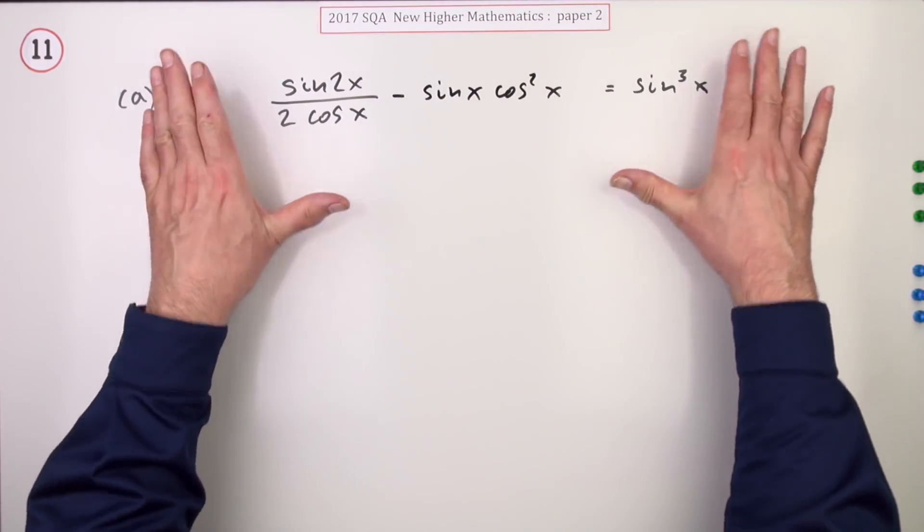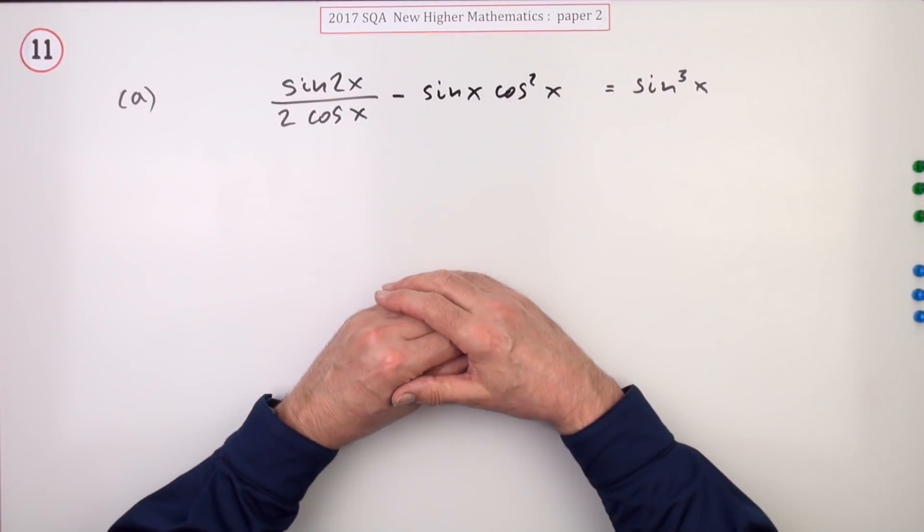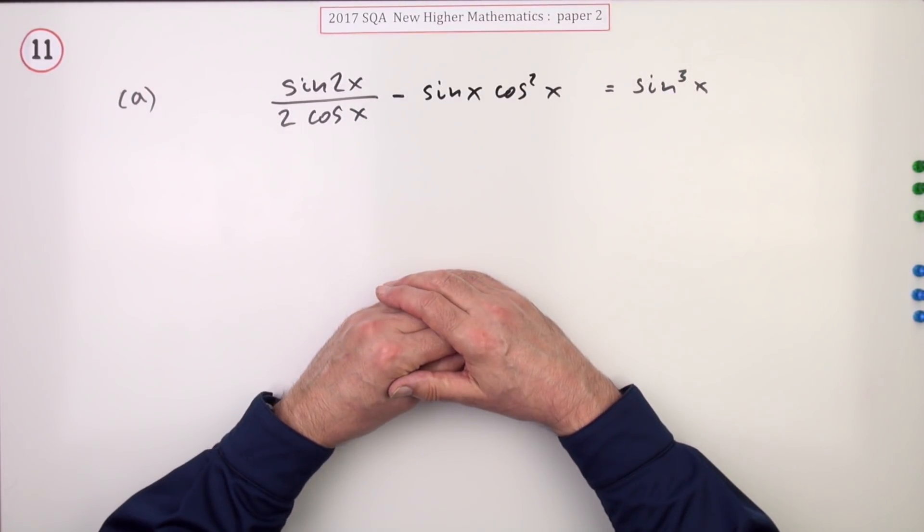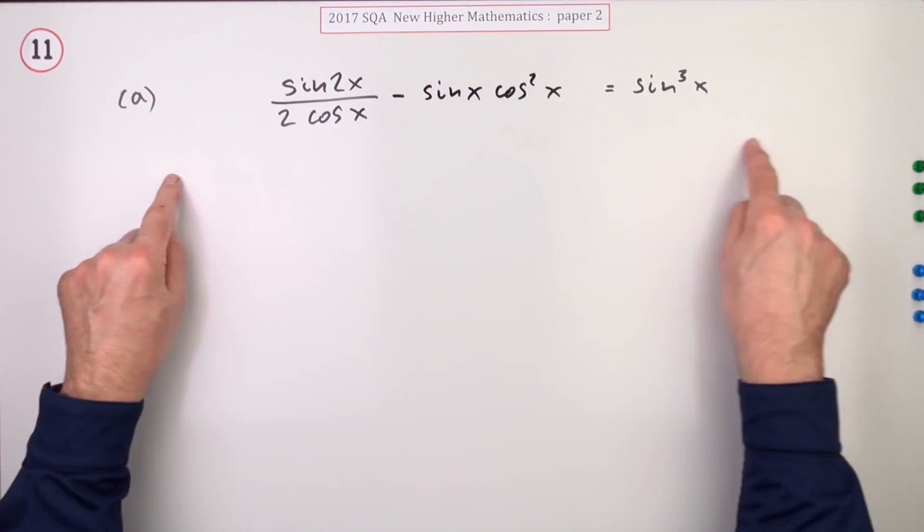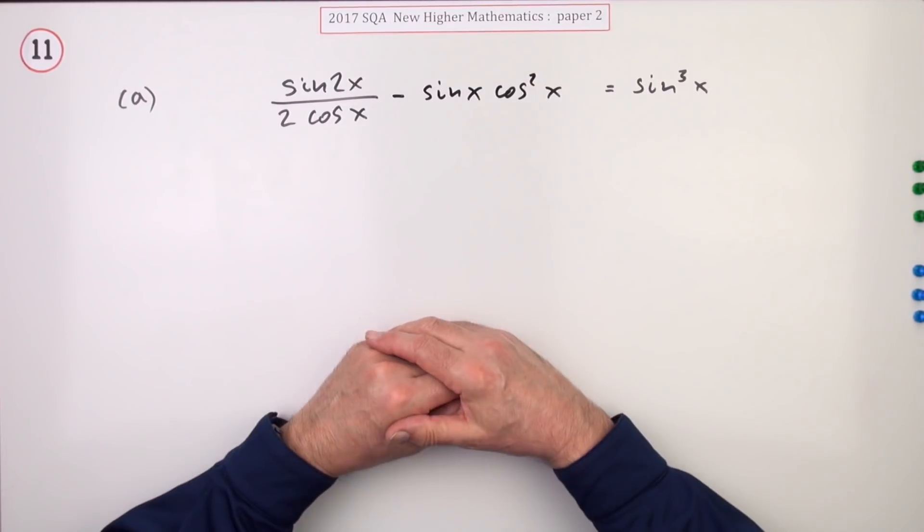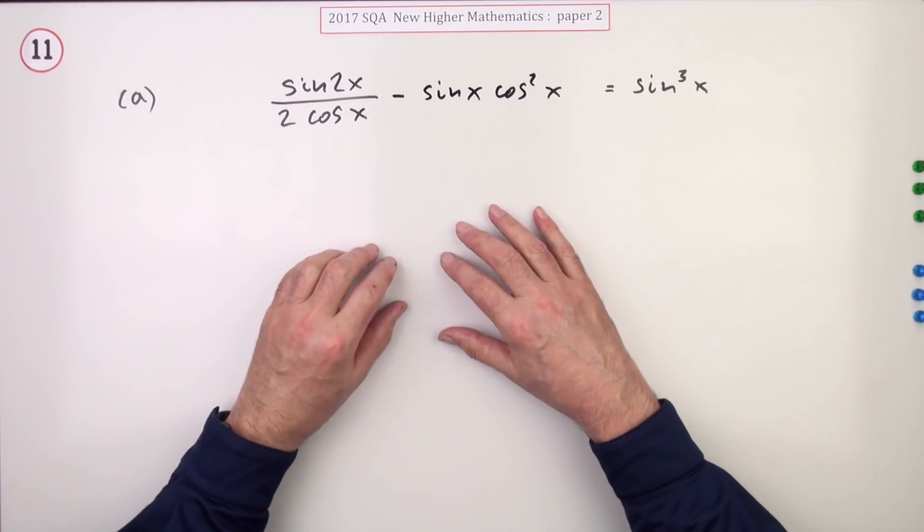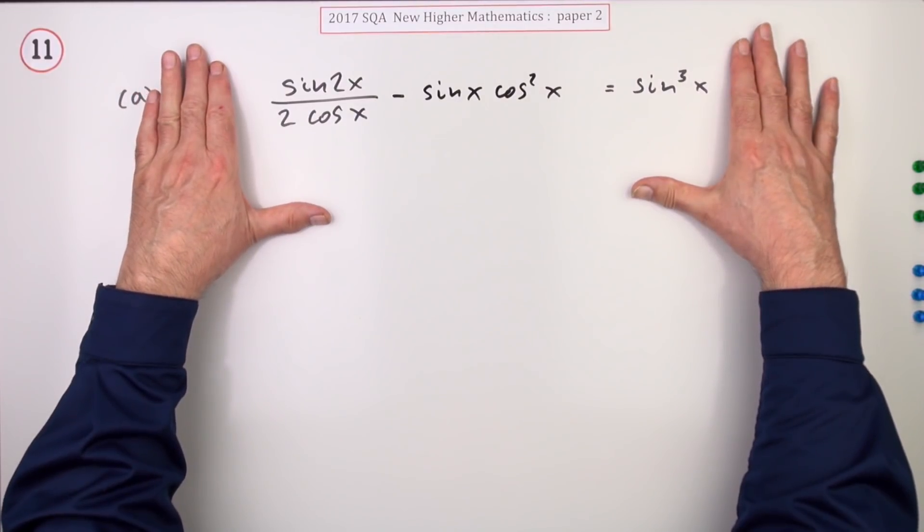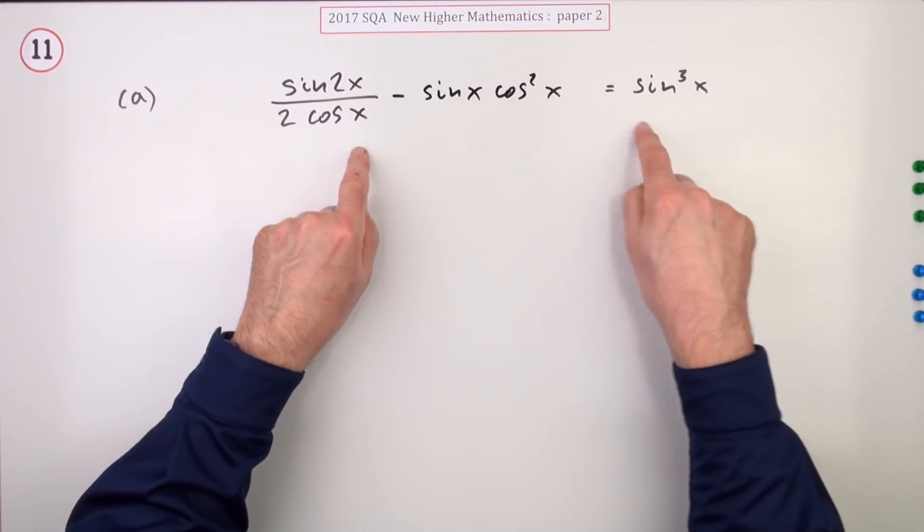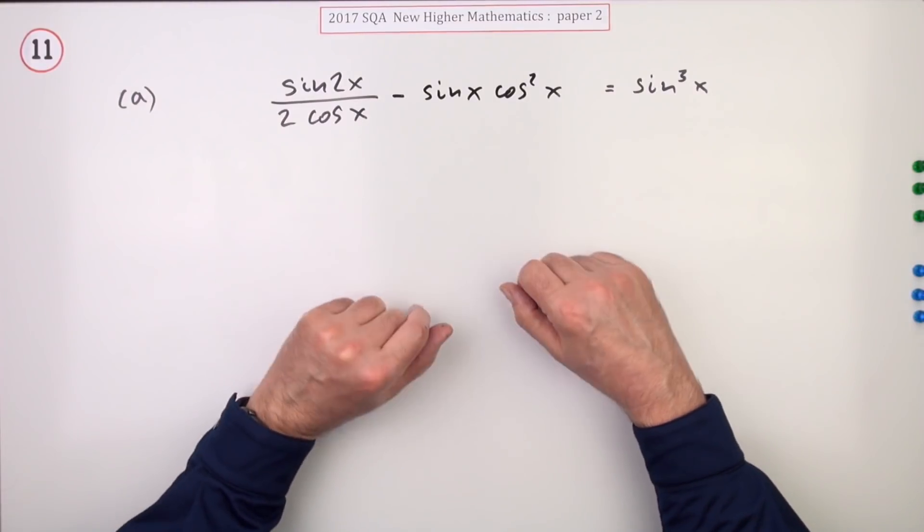Trig identities used to get them all the time way back when, not so much for a long time, and this re-emergence here of trig identities. It's actually quite a simple little one. The steps really are quite obvious. It's an identity in that this is true for all x, well under a given domain.